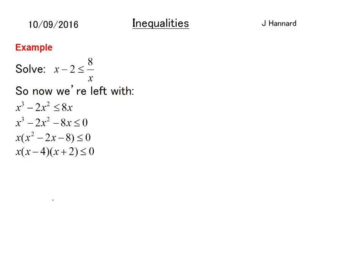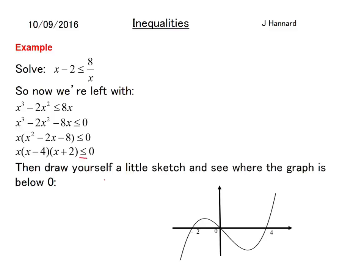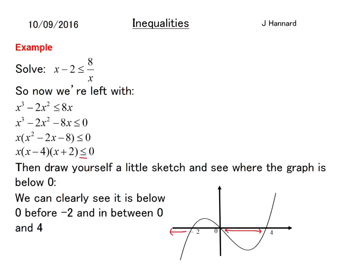At this point, if you watch my FSMQ content, you'll know what I like to do here. I like to draw myself a little graph and see where the graph is below 0 because it wants to be less than. So you draw yourself a little cubic curve going through negative 2, positive 4, and 0. And it's below the axis at this point, so backwards from minus 2 and between the values of 4 and 0. So how we write that is: x is less than or equal to negative 2, or 0 is less than or equal to x which is less than or equal to 4. Job done. That is how you solve an inequality with an x on the bottom.